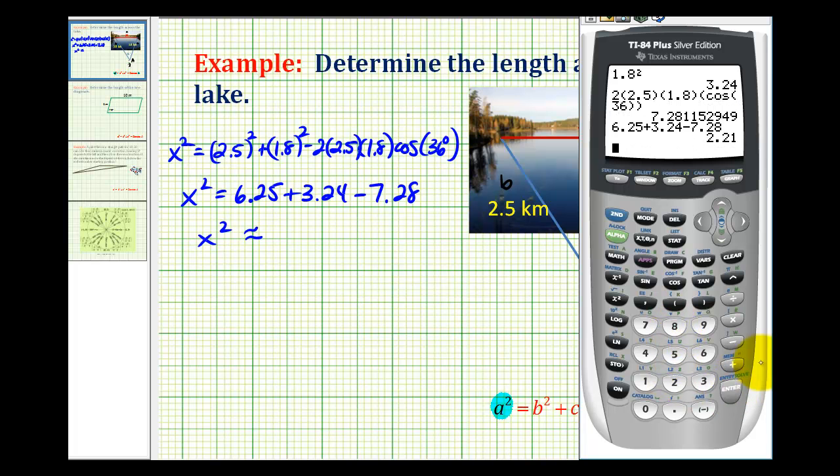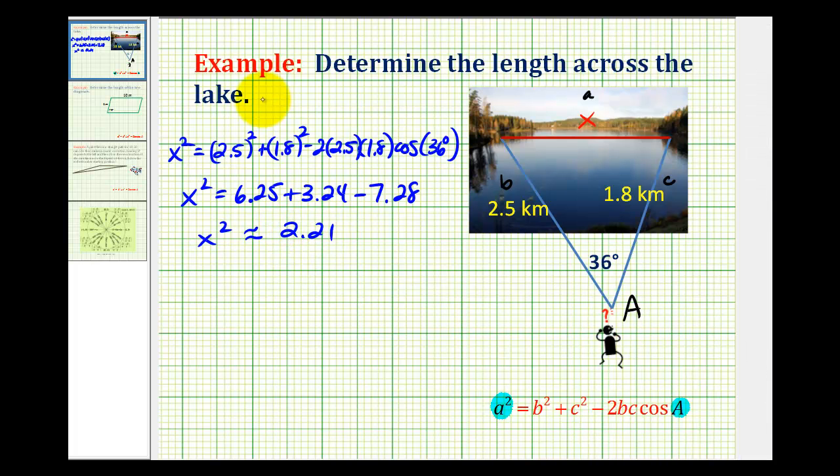So x squared is approximately 2.21 and now we can square root both sides of the equation. We know it's a distance so we only have to be worried about the positive square root. So we have x is approximately equal to the square root of 2.21.